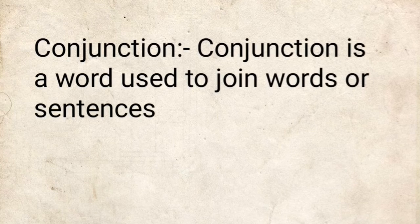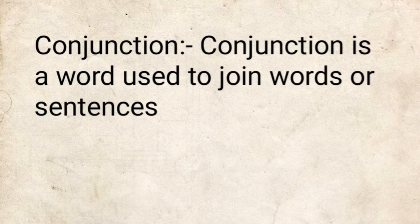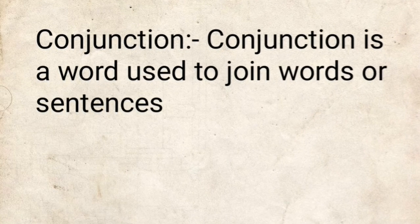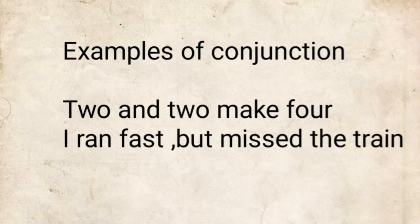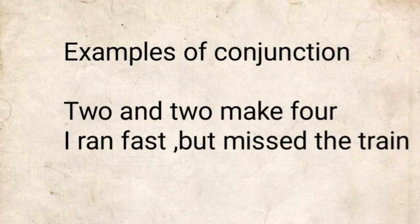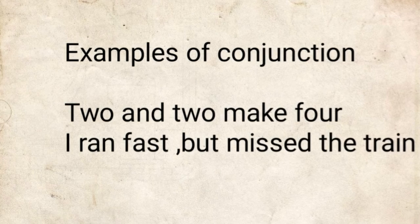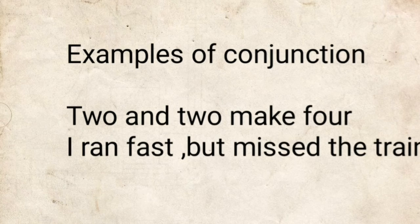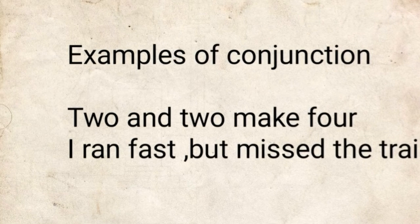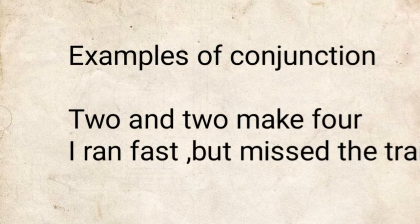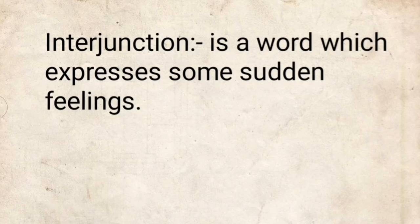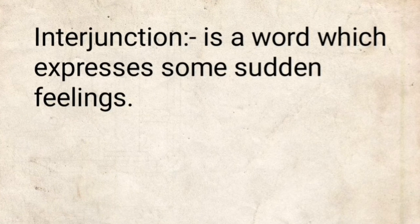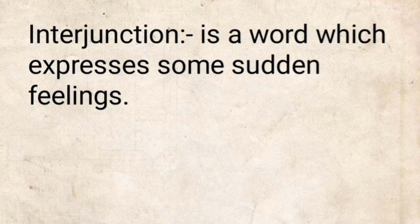A conjunction is a word used to join words or sentences. Examples: 'Two and two make four' — here 'and' joins the two parts. 'I ran fast but missed the train' — here 'but' connects two contrasting ideas in the sentence.